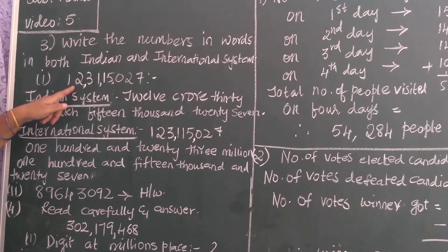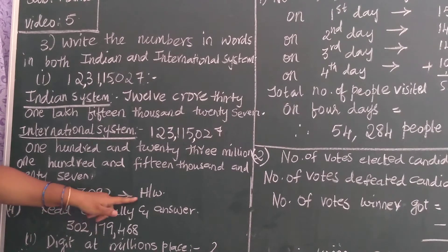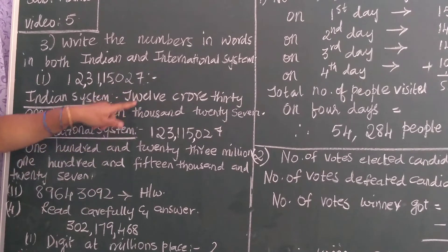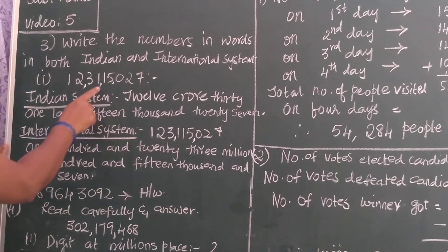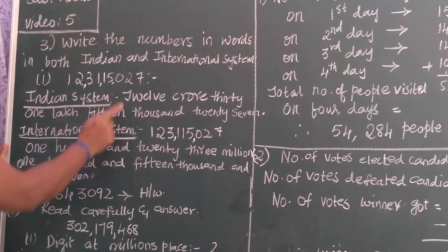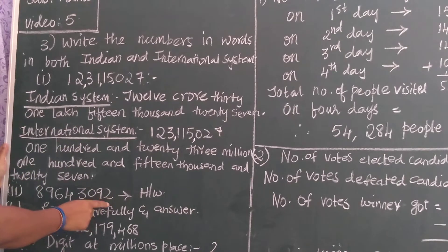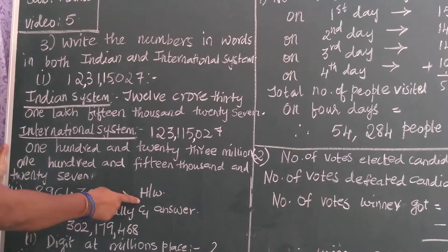I have done only one example for you children. The second number is 8, 9, 6, 4, 3, 0, 9, 2 — this one you have to do for homework. As I have done here, you should express first in Indian system, second in international system, put in commas, write in Indian system carefully, international system also carefully. I have written the question here for you, marked as homework.